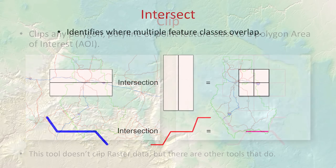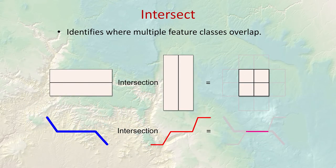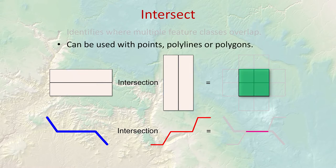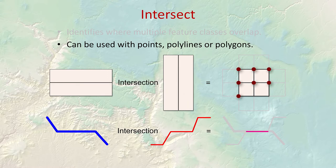The intersect tool creates a new feature class showing only regions where original features overlap. It can intersect all shape types — two polygons produce a polygonal intersection region, but you can also get polyline results from boundary intersections or point results where polygon boundaries cross. So the intersect tool can produce points, polylines, and polygons depending on the input.